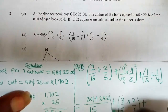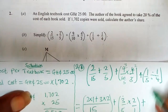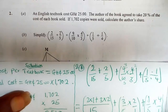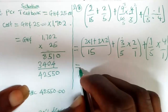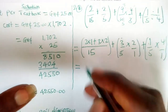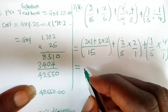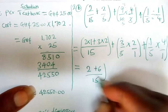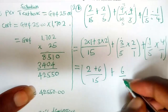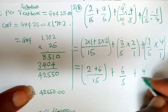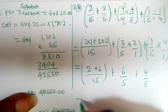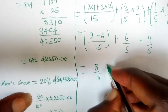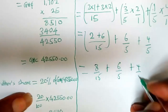All this in a bracket. Then for the division part, we have 1 over 5, and we reciprocate to obtain 4 over 1. Now this gives us: 2 times 1 is 2, so we obtain 2 plus 6 over 15, all in a bracket, plus 6 over 5. Then 1 times 4 is 4 over 5 times 1, which is 5. So we have 2 plus 6 is 8 over 15, plus 6 over 5, plus 4 over 5.